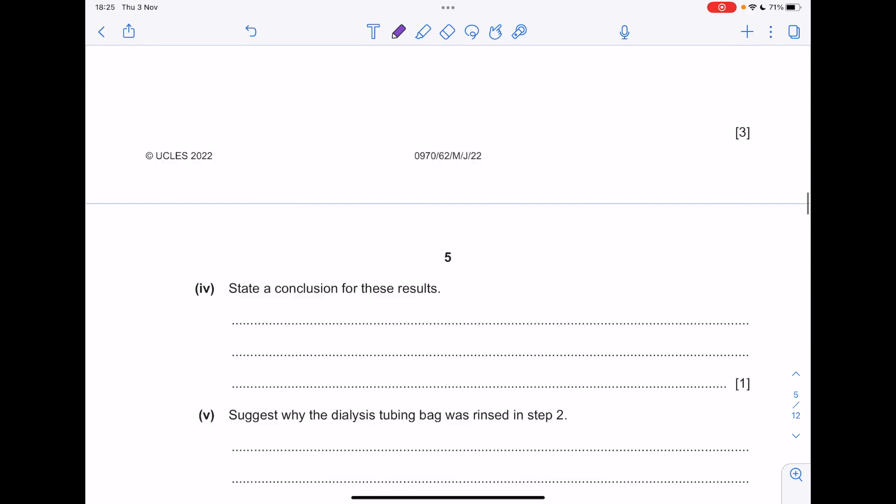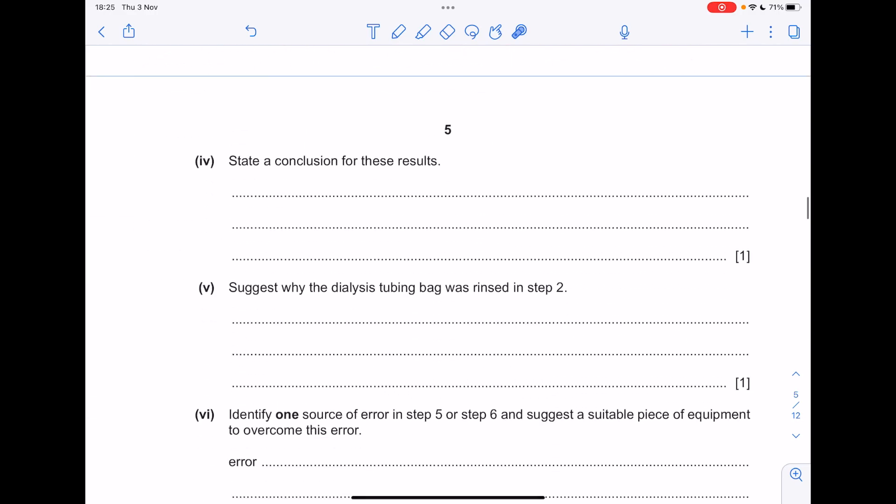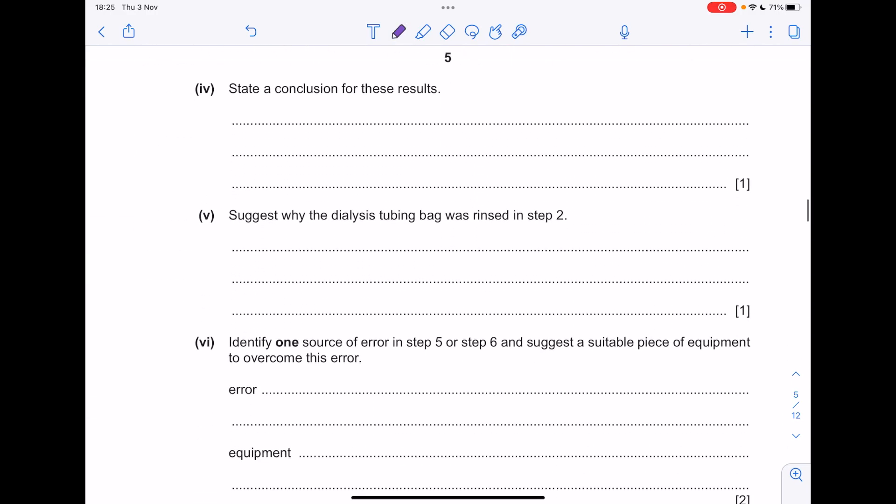State a conclusion for these results. Now because a lot more DCPIP was used up in the hot situation, that means there was a lot more vitamin C diffusing out of the inside of the visking tube, and that's because diffusion occurs faster at higher temperatures.